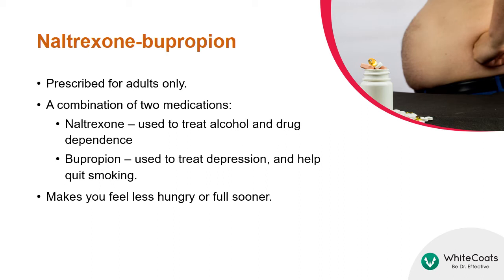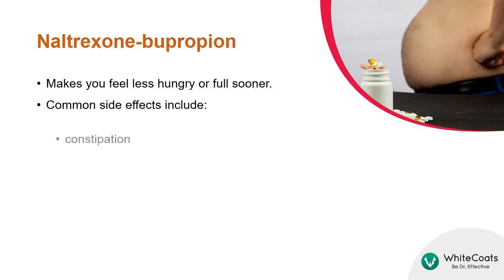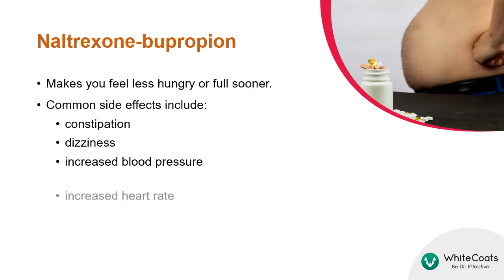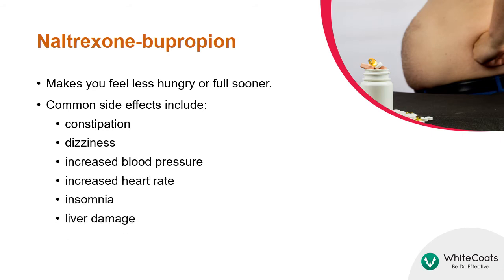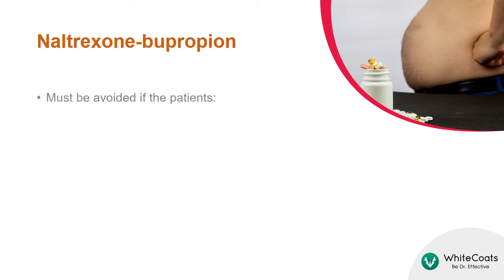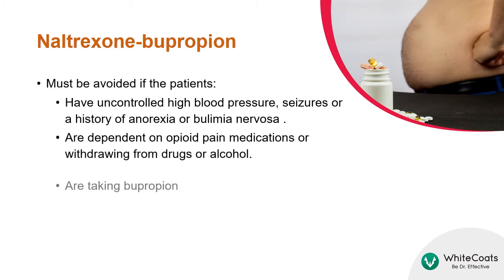Do not prescribe Phentermine-Topiramate for pregnant or breastfeeding patients, as it may lead to birth defects. Naltrexone-Bupropion is prescribed for adults only. It is a combination of two medications: Naltrexone, which is used to treat alcohol and drug dependence, and Bupropion, which is used to treat depression or help people quit smoking. This combination may make you feel less hungry or full sooner. It must be avoided if the patient has uncontrolled high blood pressure, seizures, or a history of anorexia or bulimia nervosa, is dependent on opioid pain medications, is withdrawing from drugs or alcohol, or is already taking Bupropion.